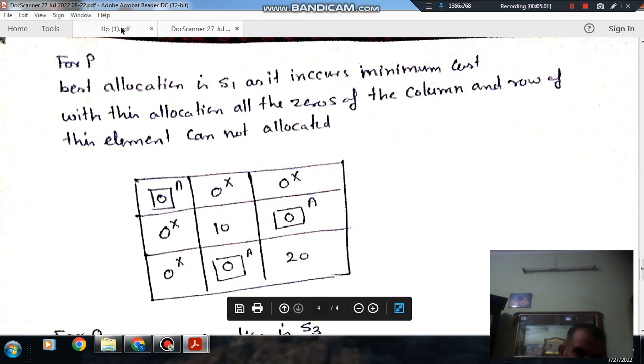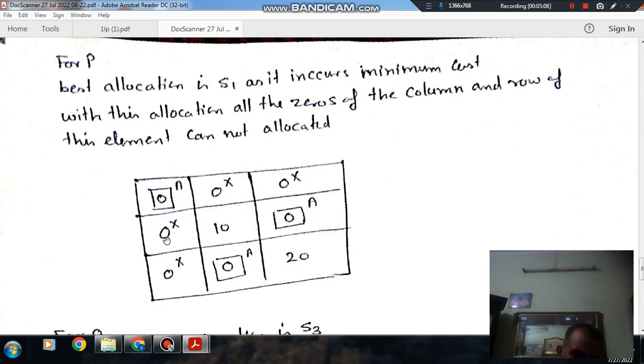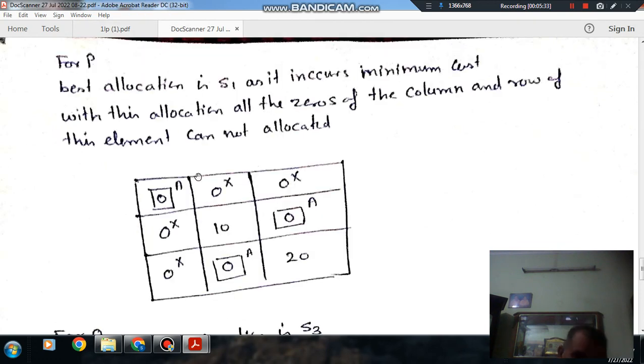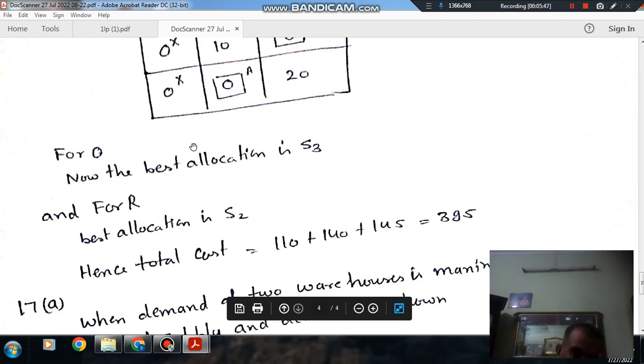Now for the second, here the 0s are here on this column and in this column. This cannot be assigned because S1 has already got items from P. Now Q will supply to S2. So now allocations are P to S1, R to S3 and Q to S2. Now the total cost will be 110 for this, 140 and 145, that is 395.